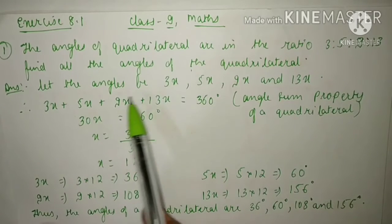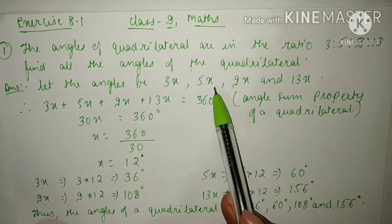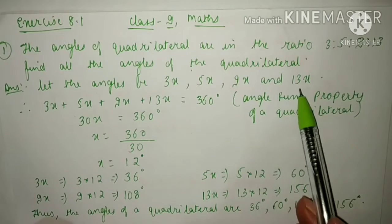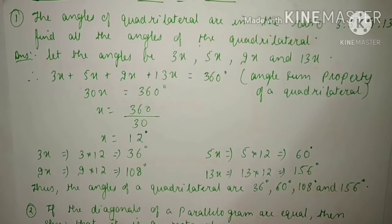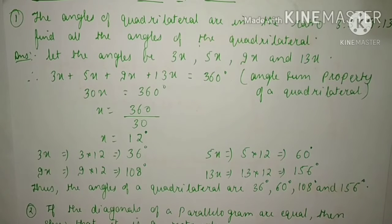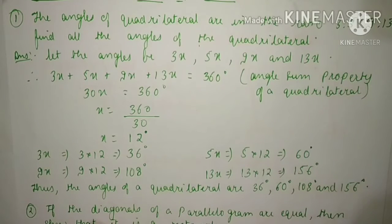In yesterday's class, we studied that the sum of all angles of a quadrilateral equals 360 degrees. So the sum of all these angles will equal 360 degrees.